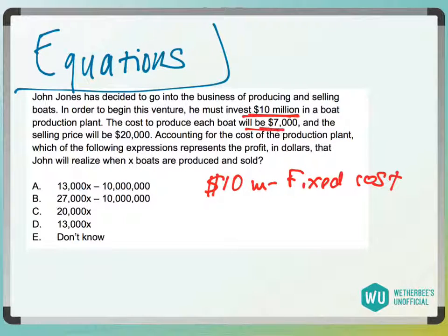And then the cost to produce each boat is $7,000. So this is the cost to produce, and he's going to sell them at $20,000. So this is the revenue, actually what it's called, what you're going to sell it for.